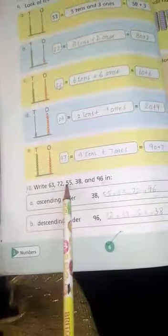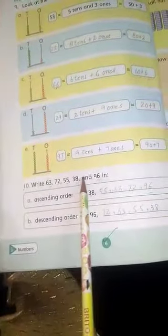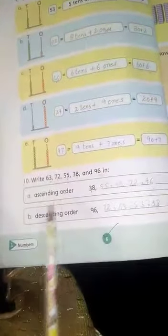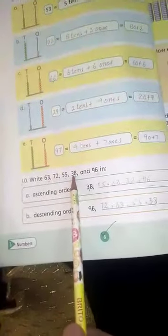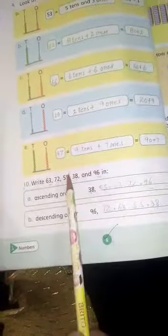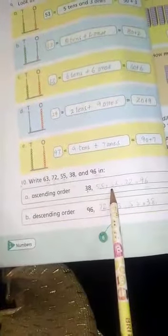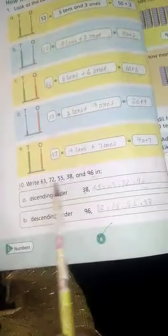Next, hamare paas hai. Aap question number 10 hai. Write 63, 72, 55, 38 and 96 in ascending orders and descending orders. In ascending order, hamare paas sending orders mein insureds ko likhna hai. Is mein sabse smaller kun sa hai? 38, then 55, then 63, then 72 and then 96.